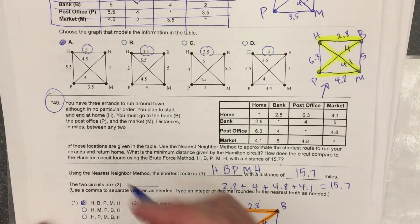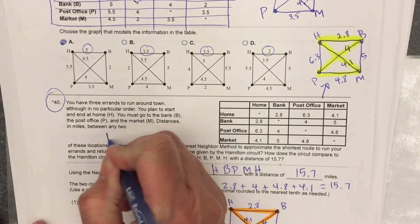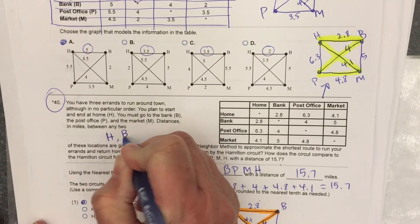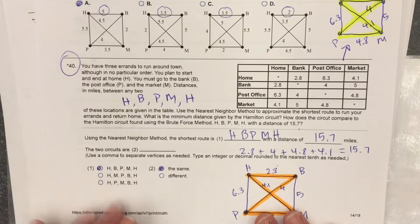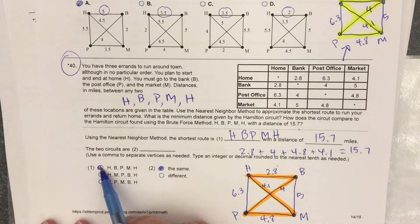So my answer, using nearest neighbor: home, bank, post office, market, home. There, that's the first one listed.